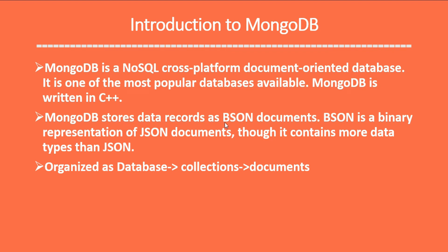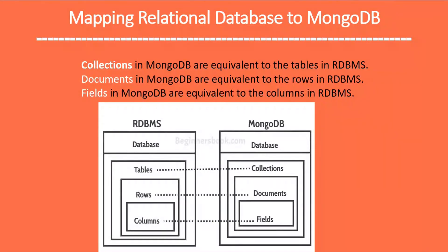MongoDB stores data records in BSON format. BSON is a binary representation of the JSON document. The hierarchy in MongoDB is: first we create a database, then we create a collection inside the database, and collections contain documents — documents are created inside collections.